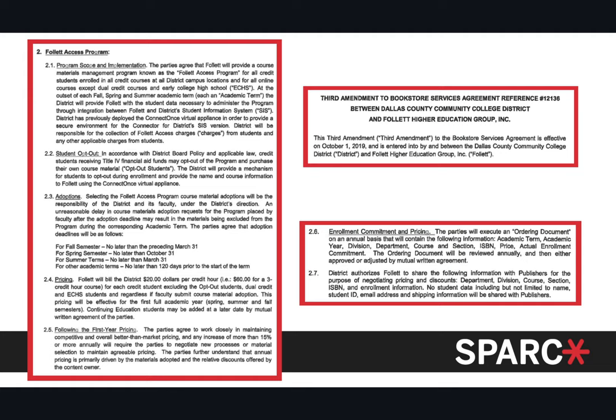You'll see a full-out access program as an addendum showing the opt-out pricing and other details — this was a third amendment to add these services. With bookstore contracts, it's less likely to see discounts, quotas, or similar terms because those deals are made between the bookstore and the publisher, and we do not have access to those under the Freedom of Information Act.